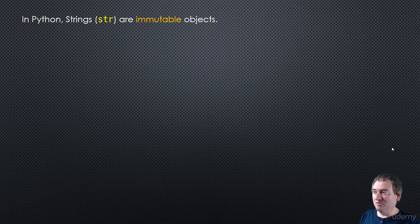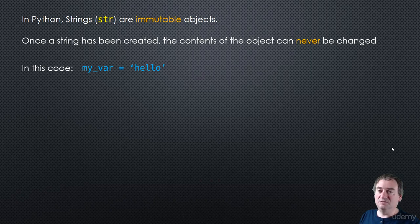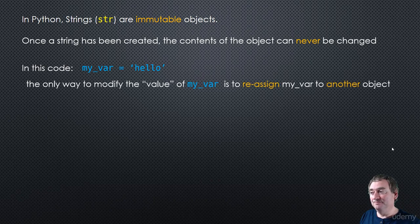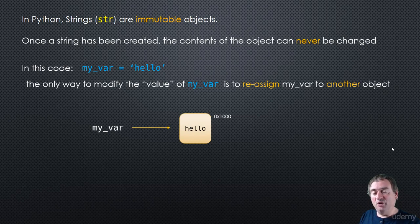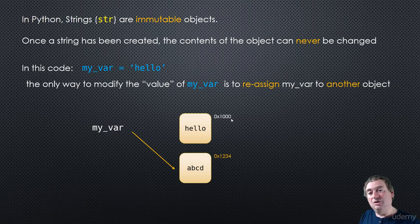Just as a refresher from the last video, remember that strings in Python are immutable objects. So once a string has been created, the object can never be changed. So if we have myvar equals hello, the only way to change myvar is to point it to a different object in memory. So myvar points to some object at memory address 1000 that happens to be the string hello. We can never modify the contents of the object at that memory address 1000 because it's a string and strings are immutable.